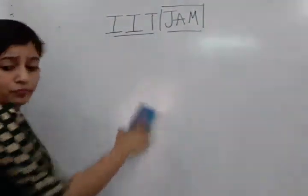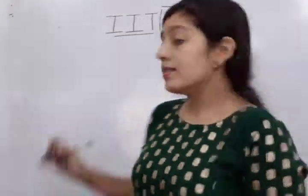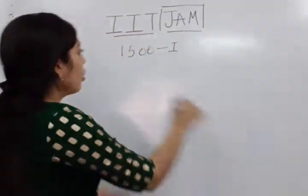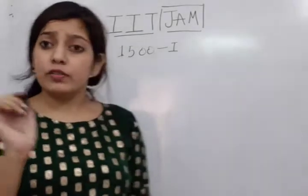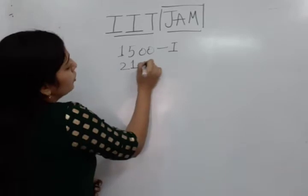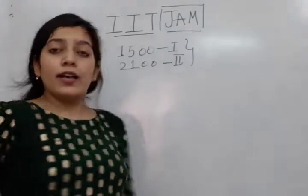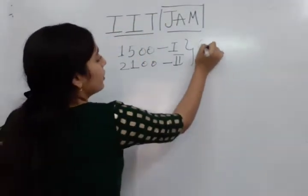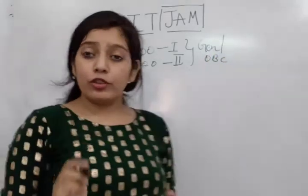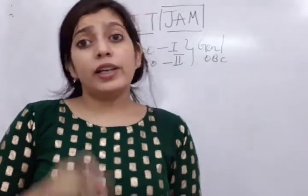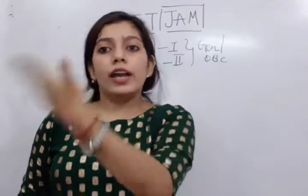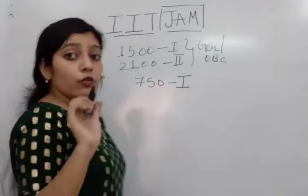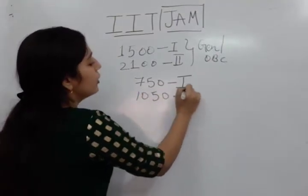For general candidates, the cost of the form is ₹1500 per paper. If a candidate is giving only one paper, the cost is ₹1500; for two papers combined, it becomes ₹2100. This criteria is for general and OBC candidates. However, for SC, ST, PWD, and female candidates — regardless of category — the fee structure is ₹750 for one paper and ₹1050 for two papers combined.